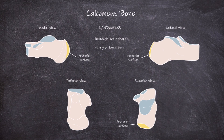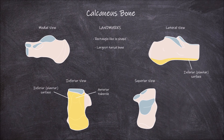The third surface is the inferior surface, which is also known as the plantar surface. This surface has an anterior tubercle on the distal end of the surface. The proximal end of this surface is roughened and bears the calcaneal tuberosity. The lateral process and the medial process are also located here and are separated by a notch in the bone.